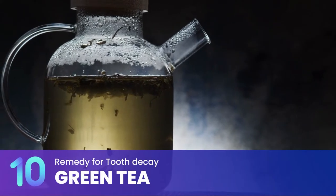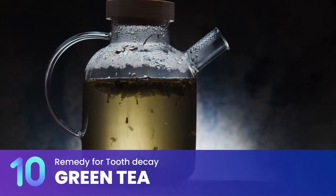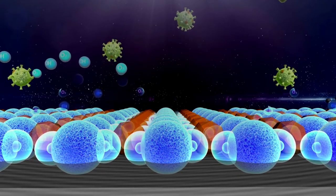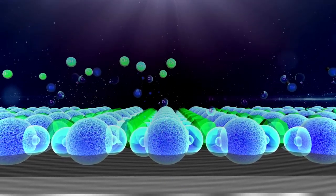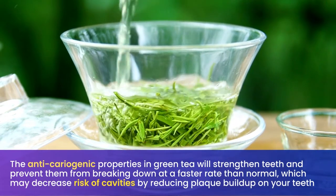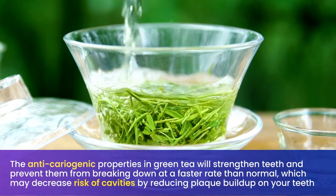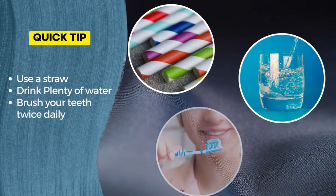Green tea is an excellent natural remedy for tooth decay. It contains fluoride, antioxidants, and antibacterial properties that can help prevent bacteria from growing in your mouth and causing cavities. Green tea also has anti-inflammatory properties that can help reduce pain caused by dental problems and reduce symptoms such as swelling or tenderness in the gums. The anticariogenic properties in green tea will strengthen teeth and prevent them from breaking down, which may decrease the risk of cavities by reducing plaque buildup.